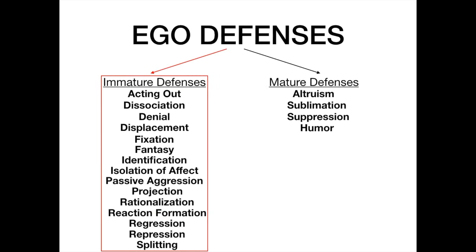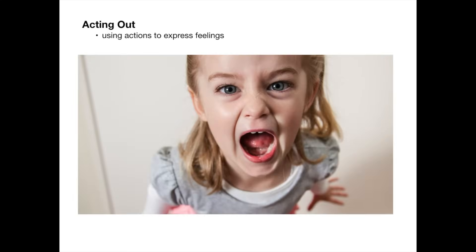Now let's talk about the immature defenses, which is a much longer list. Acting out is using actions to express your feelings — this is classic of children when they have temper tantrums. If you've ever heard the expression 'you're acting out,' this is exactly where that comes from. It's a maladaptive ego defense where you feel better by having some type of tantrum and using actions to express negative emotions.